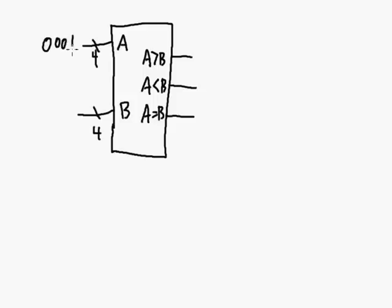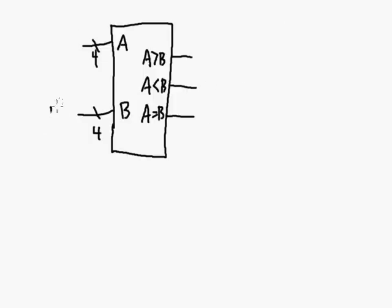What if A is 0001 and B is 1110? As unsigned four-bit numbers, B equals 13 and A equals 1. So A greater than B? No. A less than B? Yes. A equal to B? No. Pretty straightforward - just look at the values of the two inputs. What about A equals 1001 and B equals 1001? A greater than B? Yes. A less than B? No. A equal to B? No.